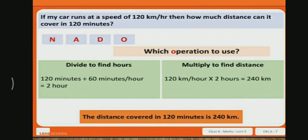S - solve the question. First, we will divide to find hours. 120 minutes divided by 60 minutes per hour equals 2 hours.